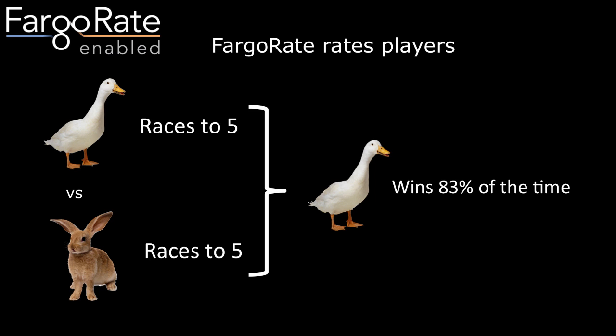Here's an example of the kind of information we can get. Suppose the Goose and the Rabbit play a race to five — both players go to five. Based upon their Fargo Ratings, the Goose is 90 points above the Rabbit, so the Goose wins 83% of the time — 83% of these race-to-five matches. That's about five out of six.